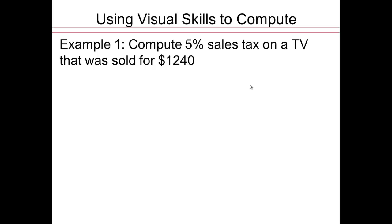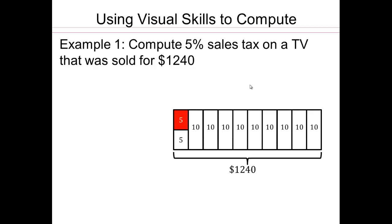So we can use these visual skills of percentage estimations and solve some problems. Suppose you want to solve 5%. You want to get 5% sales tax on a TV that was sold for $1,240. How do you think we should compute that easily? See if you can do that visually. So here's, I'm breaking the percentages. So we have 100%, so 10, 20, 30, 40, 50, 60, 70, 80, 90, 100. So I have 100%, and I want 5%. So this last box of 10%, I can go 5, and 5 will make it 10%. I only want 5%, so I really just want that.